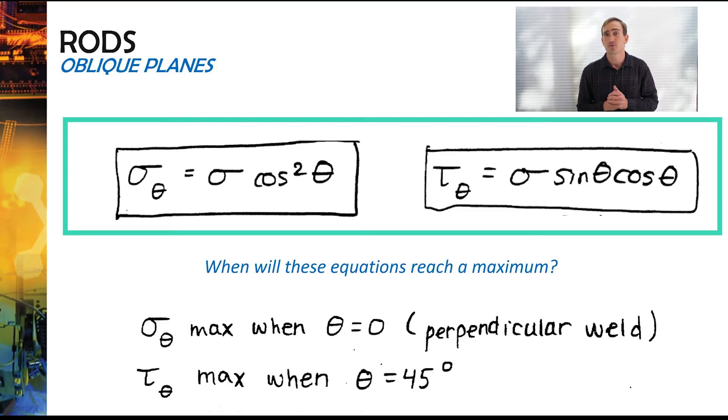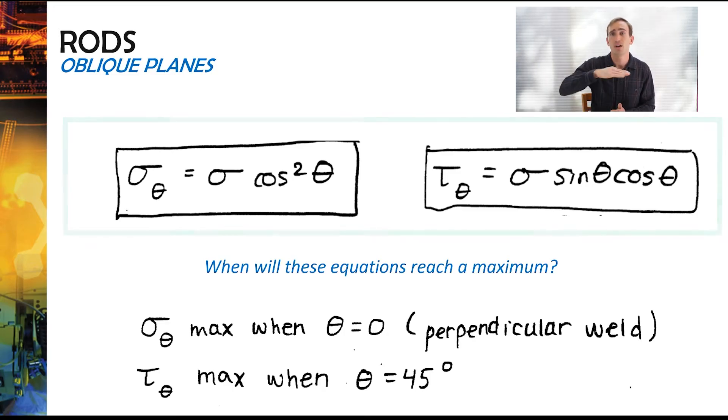Well, pretty much normal stress is going to be maximum if the weld itself had an angle of zero degrees, because then you just have a perpendicular weld. So normal stress is going to be the highest because there actually isn't any shear stress at all. The weld is just two sections like this.